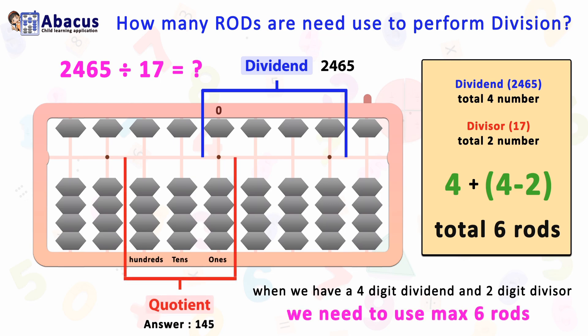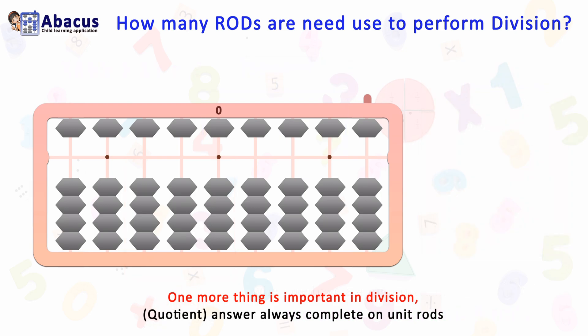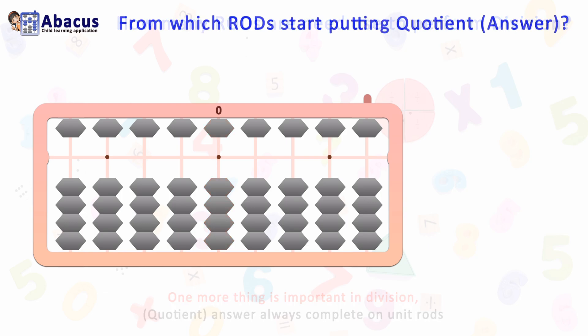One more important thing in division: the quotient answer always completes on the unit rod. Now let's see from which rod we start putting our answer.